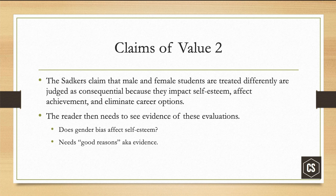In that same study, the researchers claim that male and female students are treated differently, and they judge it as consequential because it impacts self-esteem, achievement, and career options. They back up their claim of value — saying it's bad that female students are treated differently — with evidence. The reader needs to see evidence of these evaluations. Does gender bias affect self-esteem? They would have to prove that, providing good reasons, meaning evidence, and an explanation of that evidence in a way that's compelling to the reader.